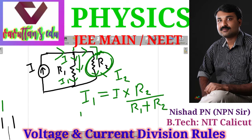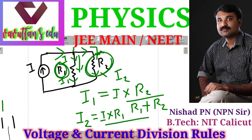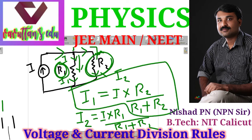Similarly, I2 is equal to total current I multiplied by other branch resistance. Here, other branch resistance is R1. So I2 is equal to I multiplied by R1 divided by total resistance R1 plus R2. This is one of the most important concepts.